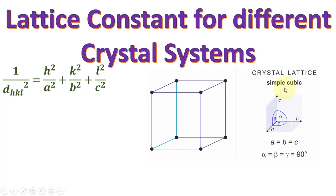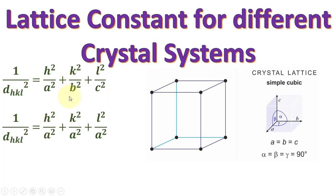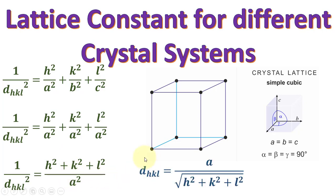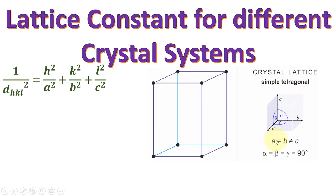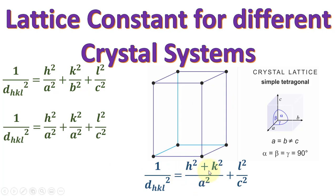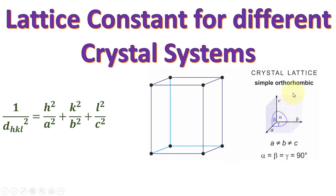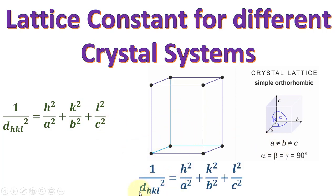For a simple cubic lattice, all three sides are equal, so A equals B equals C. We can replace all of them with A, take A-squared as common, and write that the interplanar spacing equals the lattice constant divided by the square root of the sum of Miller indices squared. For simple tetragonal, A equals B but C differs, giving H² + K² + L²/C². For orthorhombic, all three sides are unequal, so the interplanar spacing relation remains in its full form.